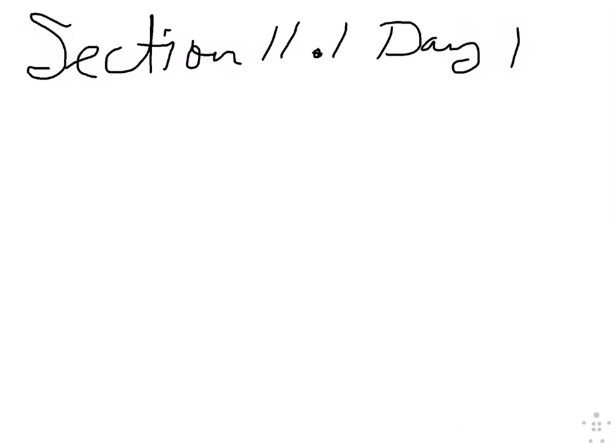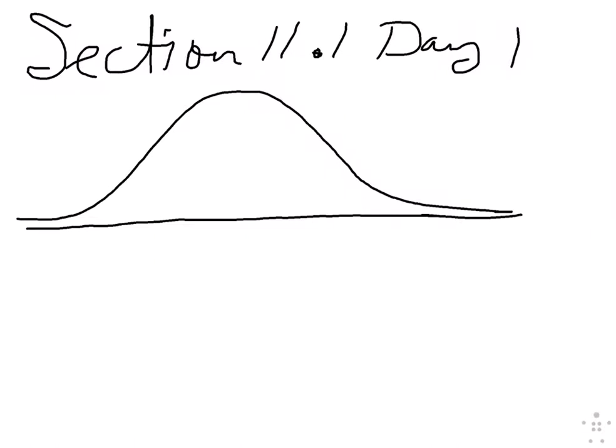And what we're going to look at today is we're going to look at the normal distribution curve. What a normal distribution curve is, and I can't draw it very well. I'm going to do my best. But it looks something like this. Looks like a hill. Now, it's also referred to as the bell curve. Have any of you guys ever heard of those terms before? Bell curve?